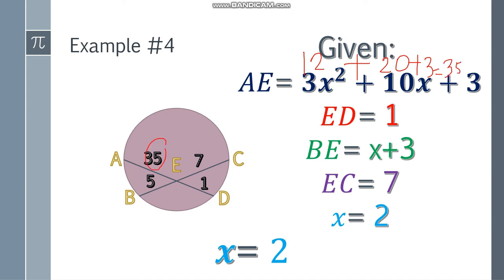35 times 1 is 35, times 1, is equal to 5 times 7, which is correct. They are both 35. So we're correct.